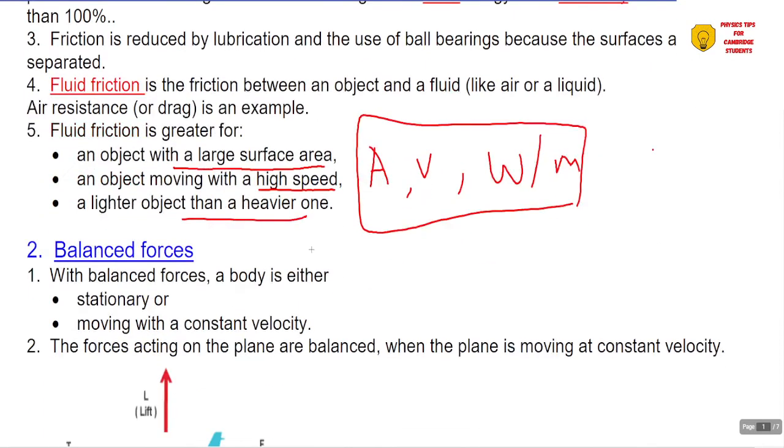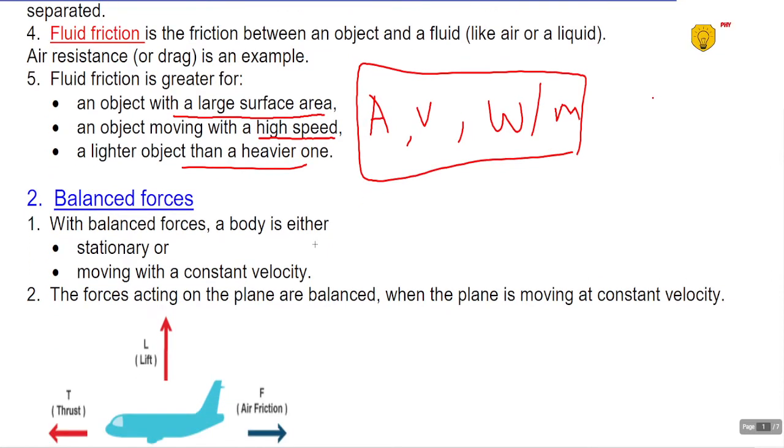Now balanced forces. With balanced forces, we have a body that is either stationary or that is moving at constant velocity. So just remember that when something is moving at constant velocity, the forces will be balanced. So there is no resulting force. In other words, the acceleration will be zero.